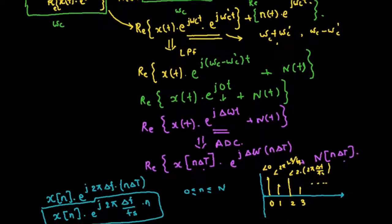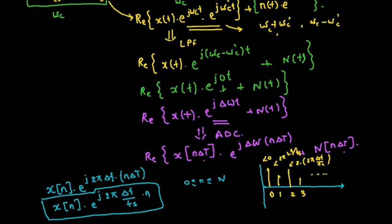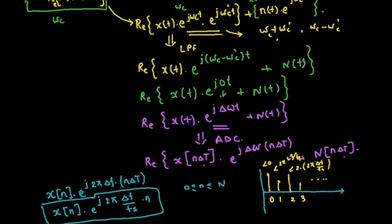When we do the analog to discrete conversion, we end up with this equation: x of n times e to the power of j 2 pi delta_f over fs times n. We also saw that each and every individual sample is going to be rotated by a certain phase, and that phase rotation is a function of 2 pi times delta_f over fs. So now let's look at how we are going to program this into a simulation.